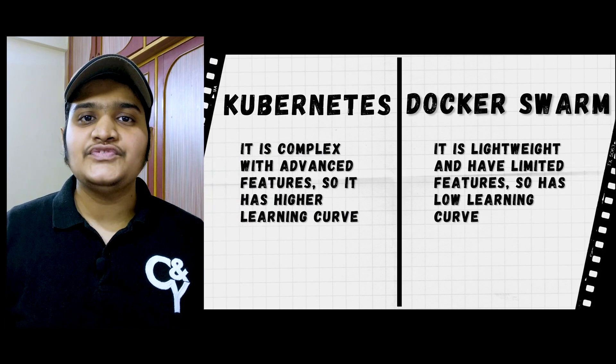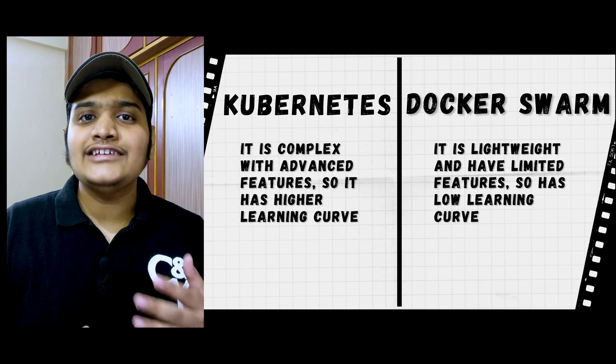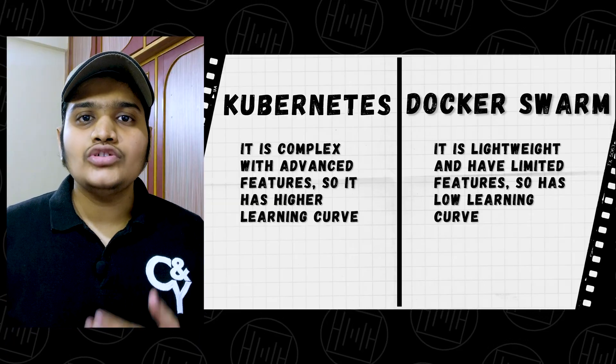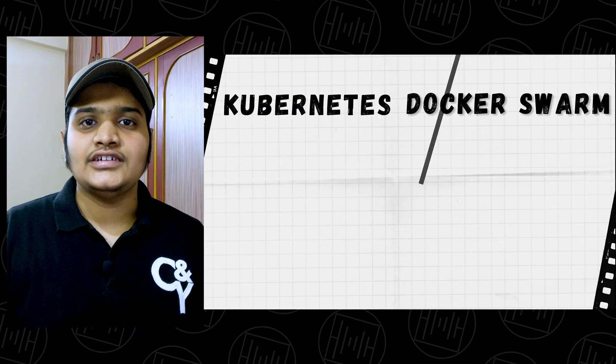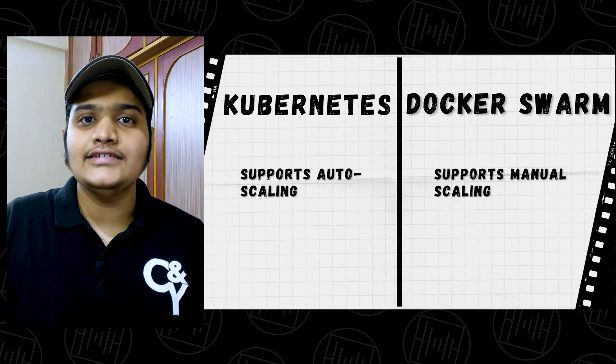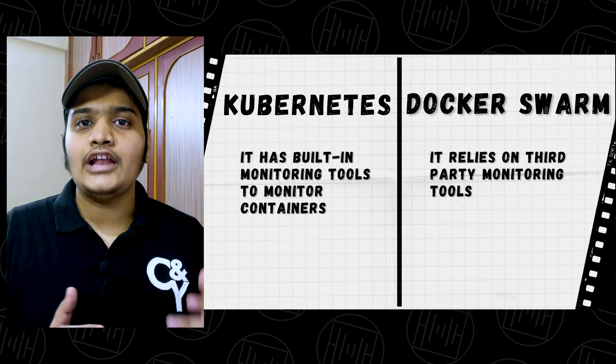Kubernetes is very complex with more advanced features and is very powerful, so it has a very high learning curve. Docker Swarm is very lightweight and has limited features, so the learning curve is very low. Kubernetes supports auto-scaling of containers in a cluster, but Docker Swarm doesn't support auto-scaling — it requires manual configuration to scale the containers.